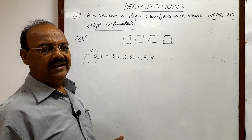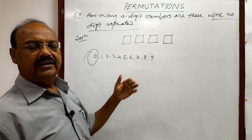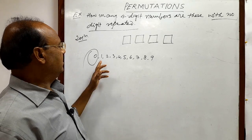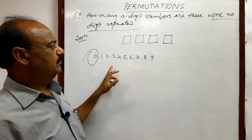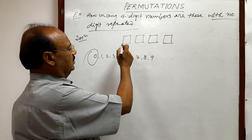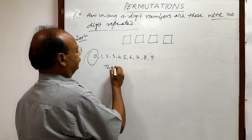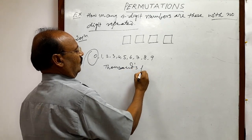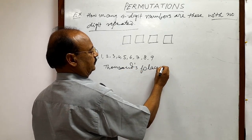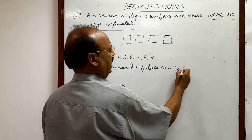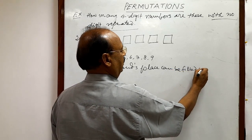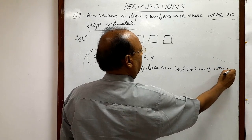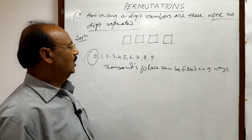For the thousands place, the total number of digits that can be used will be nine. So in how many ways can we fill this place? There are nine ways — we can take any one out of these nine. So the thousands place can be filled in nine ways.